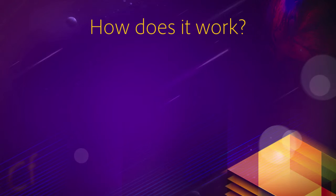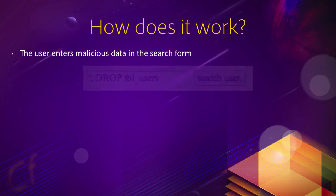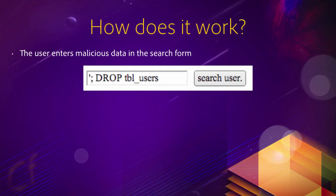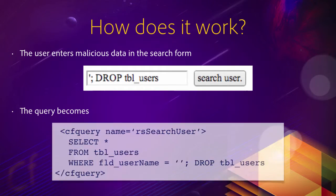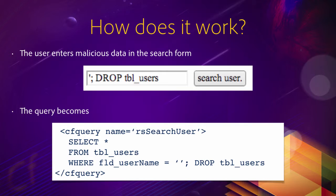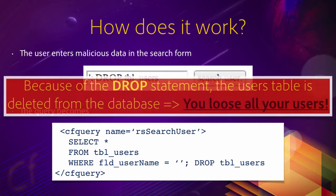Now imagine that some malicious user submits a snippet of SQL code in the form. In that case, the query becomes: select everything from the table users where the username is an empty string, semicolon, drop table users. In SQL, the semicolon is used to separate different statements. So the select statement will retrieve data from the database, and then the drop statement will delete the users table from the database. The result is that you lose all your users.